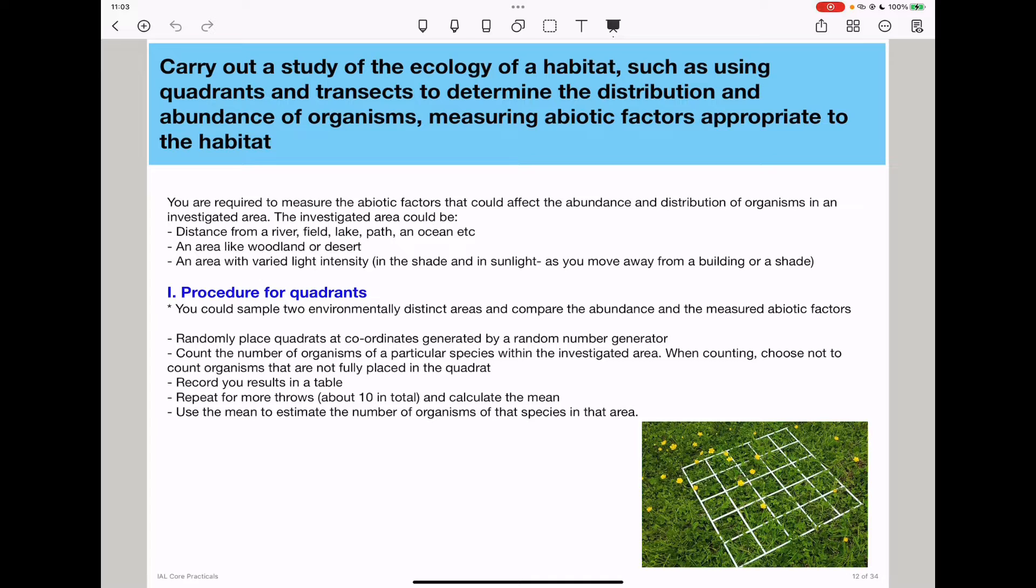When you use quadrats, you have to throw them randomly or use a random number generator. The investigated area could be a distance from a river, a field, a lake, a path, or an ocean. Also, an area like a woodland or a desert could be a good choice. You could also choose an area with varying light intensity, maybe moving from the shade into the sunlight or around a building, moving from closer to the building where there is lower light intensity to far away where there is more light intensity.